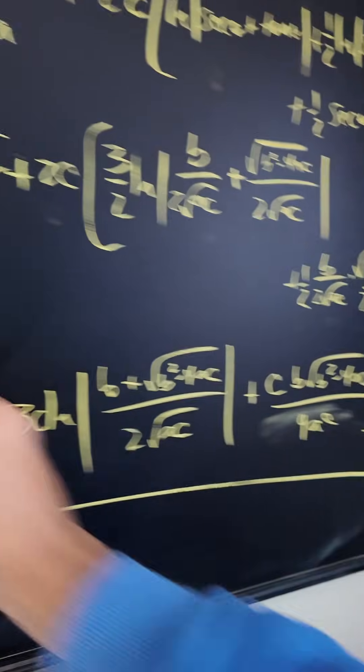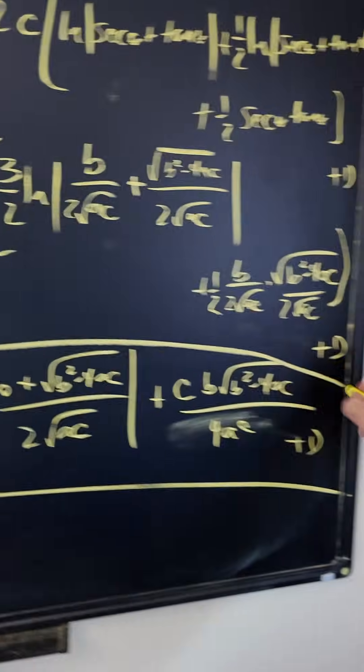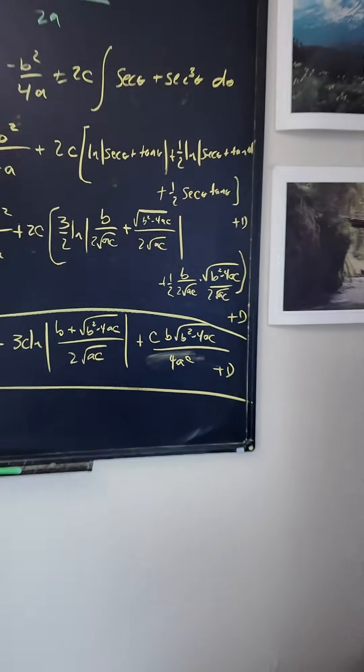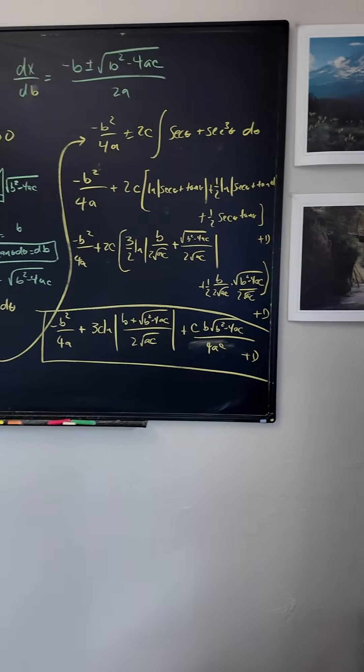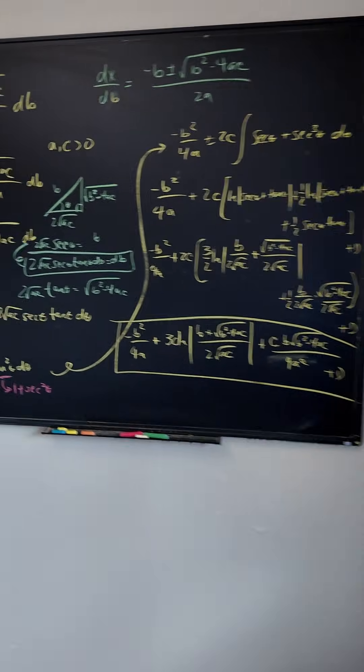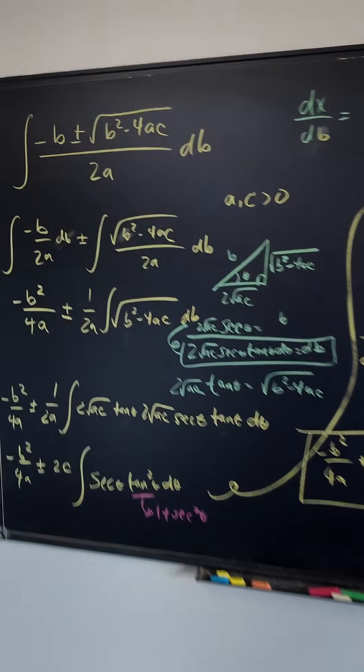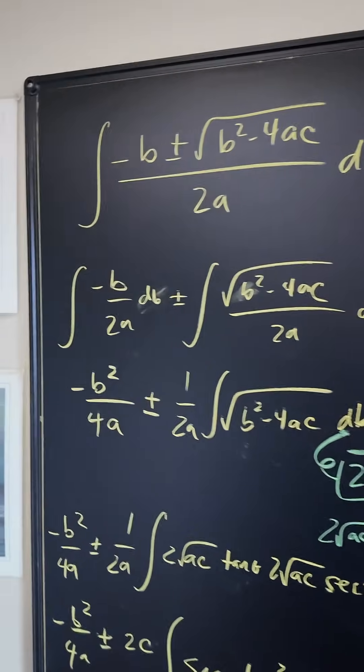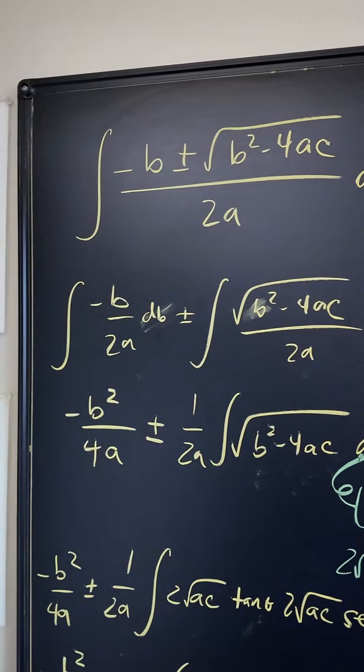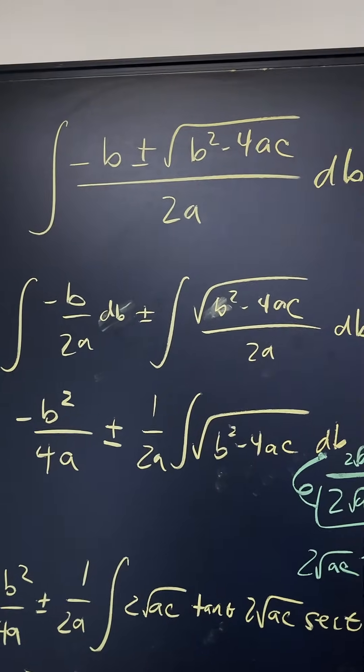And if you're here at the very end, we have officially completed the integral of the quadratic formula with respect to B. The final answer is negative B squared over 4A plus or minus 3C · ln((B + root B squared minus 4AC) / (2 root AC)) plus CB · root B squared minus 4AC over 4AC, plus the constant D.